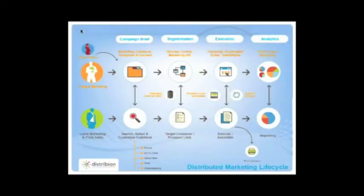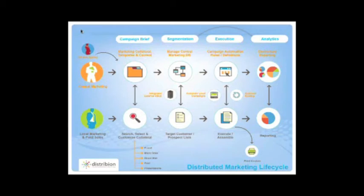So let's move on to what we call the Distributed Marketing Lifecycle. At the very top you'll see the different silo segments: campaign brief, segmentation, execution, and analytics. We run on two levels. One is central marketing, where you're working with creative agencies and marketing consultants, developing marketing collateral templates and content. Then you move to segmentation — managing the central marketing database — which can be integrated into a DB marketing consulting firm, such as Merkle, Park Hanks, or Epsilon.